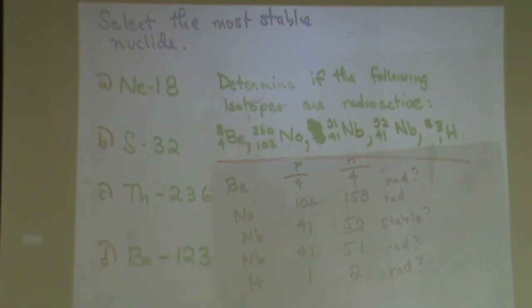Why is it radioactive? I'm thinking that the first one might be radioactive because it doesn't match the periodic table. Well, it's beryllium 8 and the periodic table has beryllium 9.